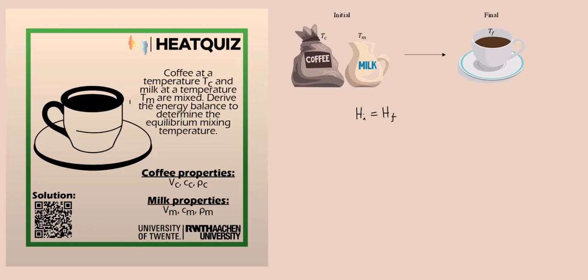The initial enthalpy would be a combination of the respective enthalpies of each of the elements, which is coffee and milk. And that could be written as MCT of the coffee plus MCT of the milk, which would be equal to MCT of the final mixture.